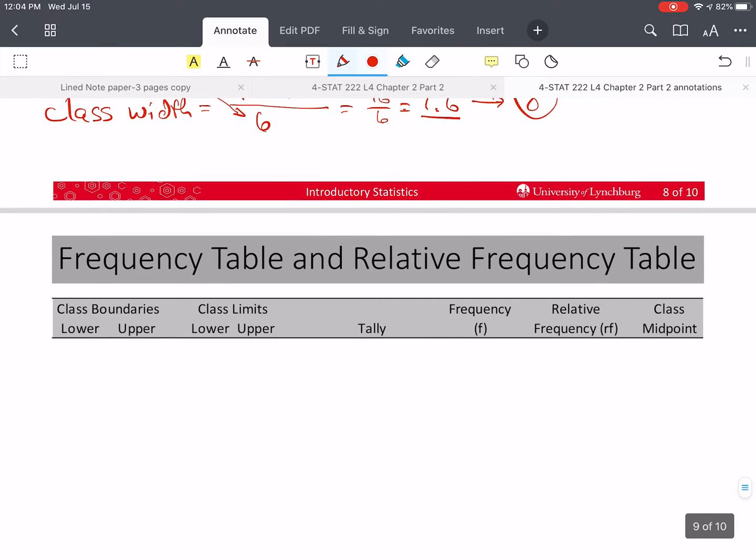All right. So we're going to start with our class limits. And we're going to get the lower and upper class limits. Remember, we need six of these. So the first thing I'm going to do is use the smallest value in the data, which was a one. And I'm going to add the class width to it, which gives me a nine, and then a 17, and then a 25, and then a 33, and then a 41. And those are six numbers. So that means I have six classes.